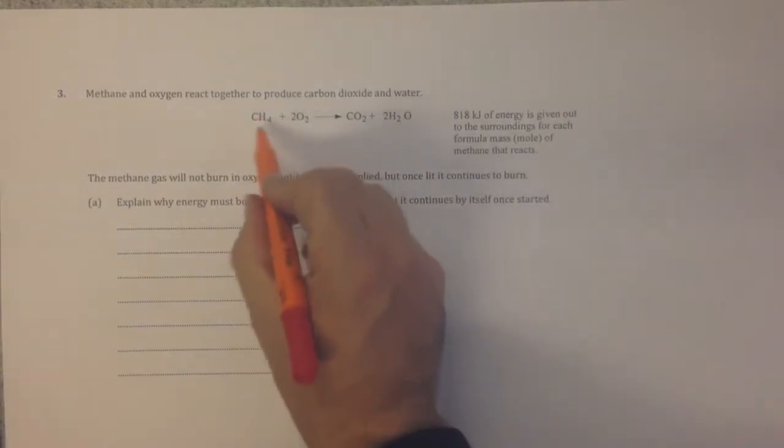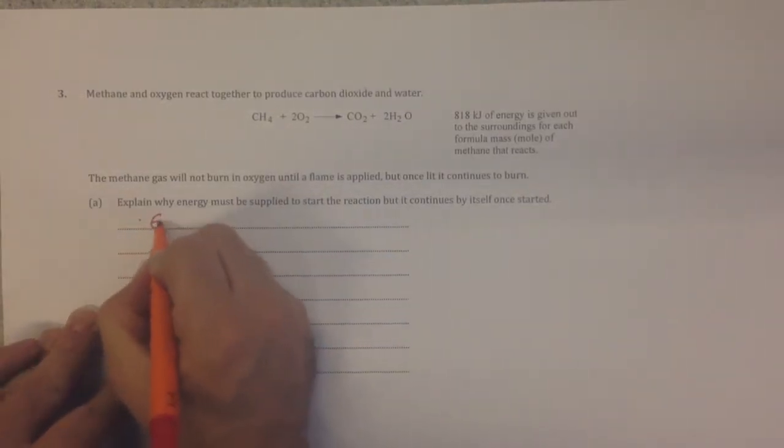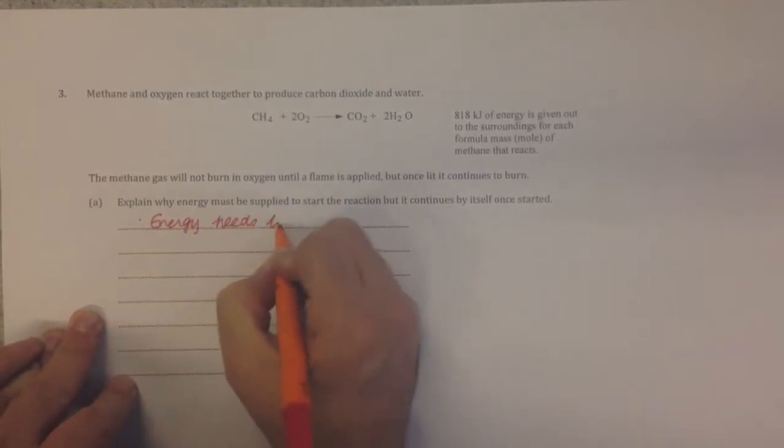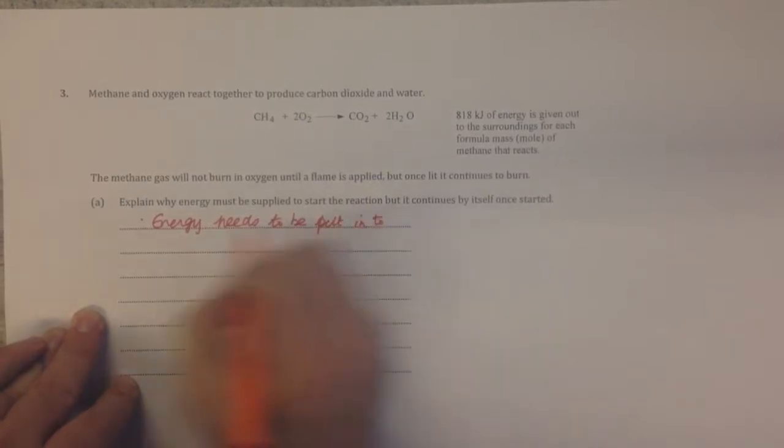Before we can get the methane to burn, you have to break the bonds in the methane. Bond breaking is endothermic—it requires heat. So the first thing is energy needs to be put in to break the bonds.